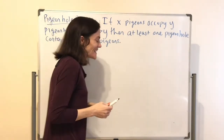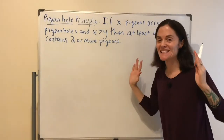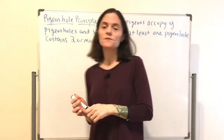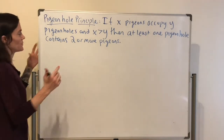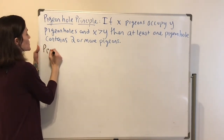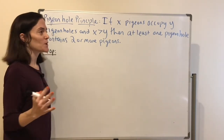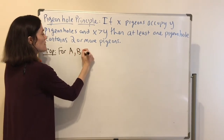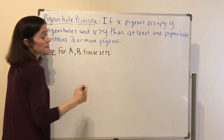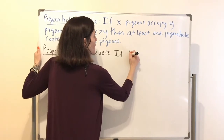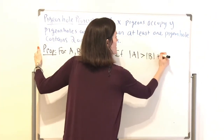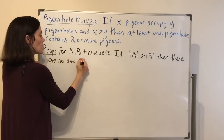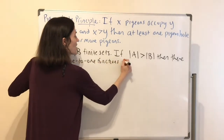This might not seem like math stated in terms of pigeons and pigeonholes, but the Pigeonhole Principle is very powerful — sometimes you have to be very creative to use it. We will use it in two propositions about counting functions. The first proposition: for A and B finite sets, if the cardinality of A is bigger than the cardinality of B, then there are no one-to-one functions F from A to B.